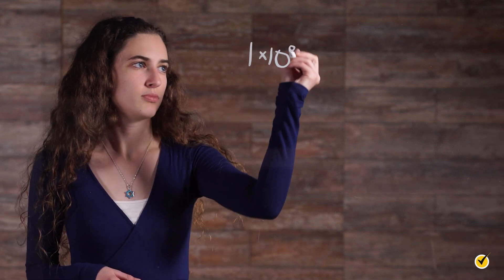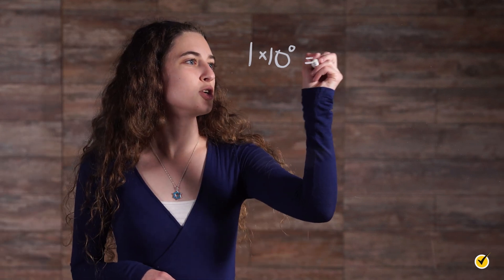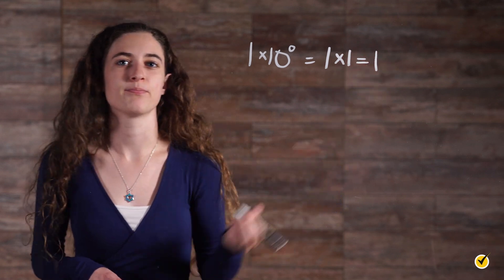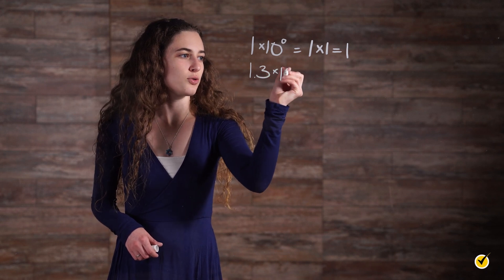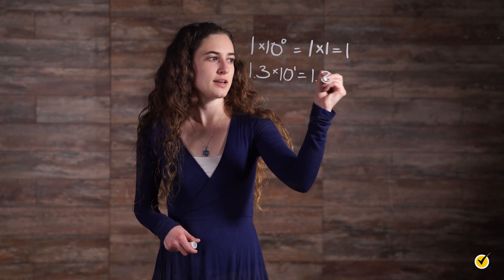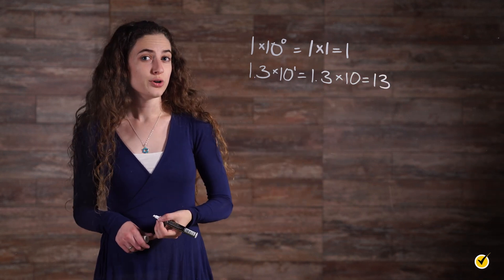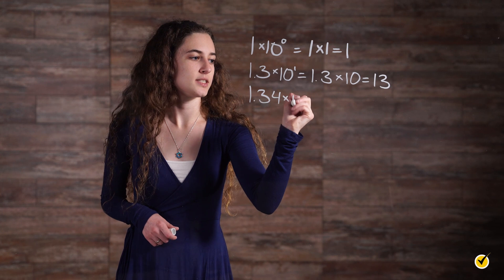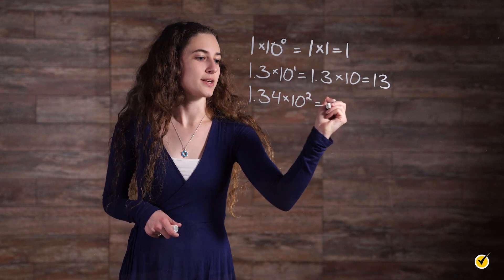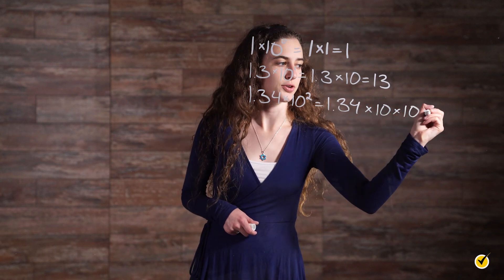We can write the number 1 as 1 times 10 to the 0. Remember, 10 to the 0 is 1, so this is equal to 1 times 1, which is equal to 1. We can also write the number 13 as 1.3 times 10 to the 1, because 1.3 times 10 is equal to 13. Or we can write the number 134 as 1.34 times 10 squared, because that is equal to 1.34 times 10 times 10, which gives you 134.